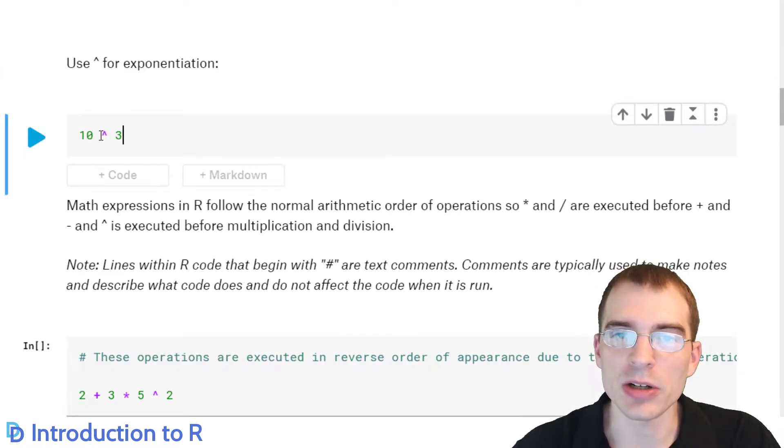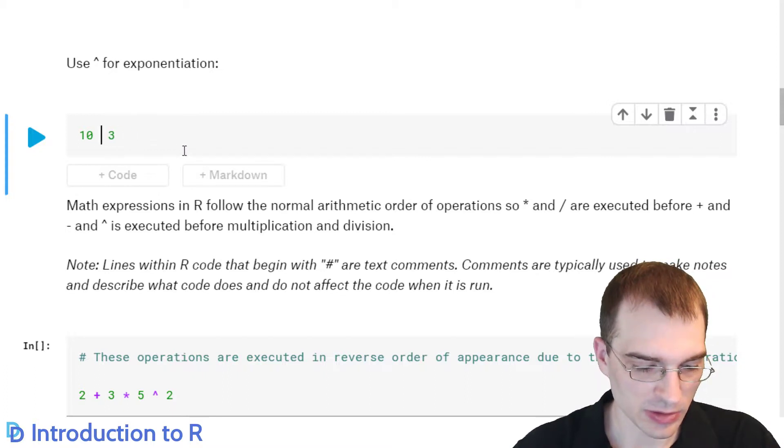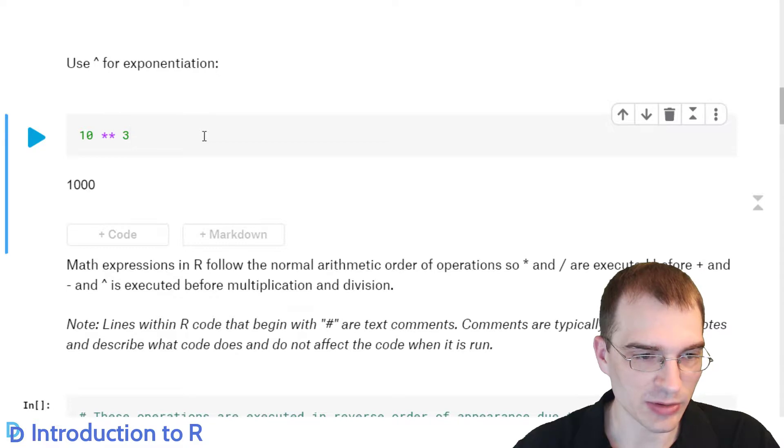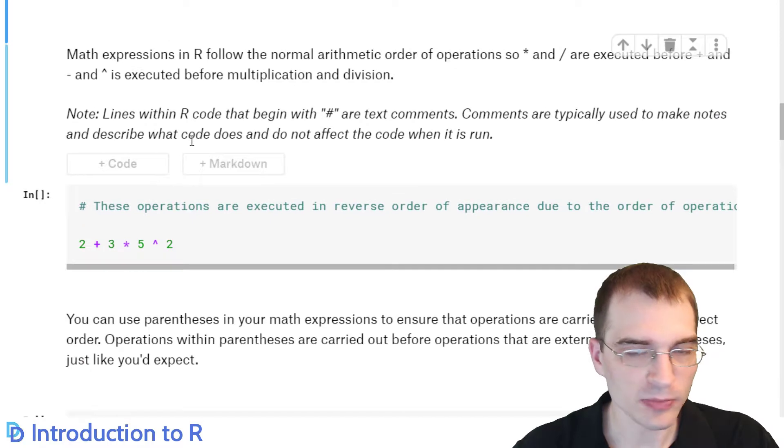And the caret symbol is used for exponentiation. This is actually different than some languages. Some languages use a double asterisk instead of a caret. So if we run this, 1,000. I guess you can use either one in R. That's interesting. Learn something new every day. I always use the caret because it's what you use in calculators, but apparently the double asterisk might work as well.